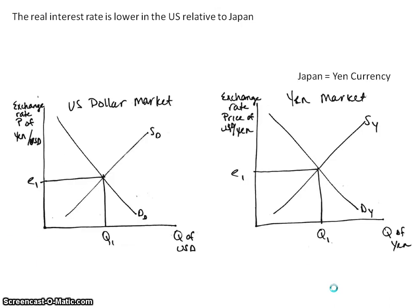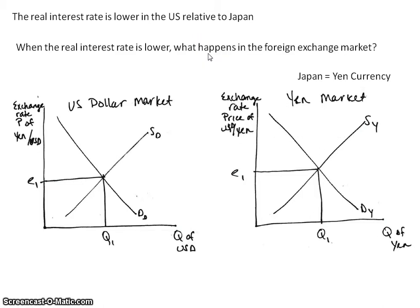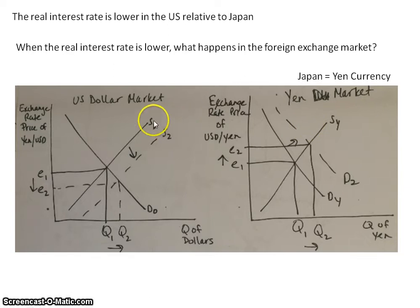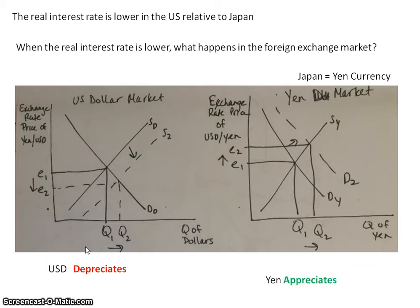Let's take a look at another example. Here, the real interest rate is lower in the U.S. relative to Japan. When we think about the real interest rate, we should be thinking about the loanable funds market and the financial assets that people can invest their savings in. When the real interest rate is lower in the U.S., people in the U.S. are going to want to move into the financial assets of yen because their real interest rate is higher. In order to invest in financial assets in Japan, you have to supply U.S. dollars in order to demand the yen. A decrease in the exchange rate means the U.S. dollar depreciates, and then the yen will appreciate. When one depreciates, the other has to appreciate.